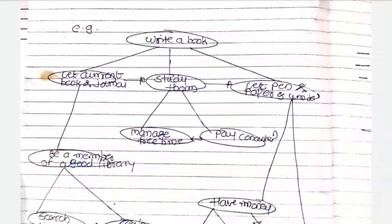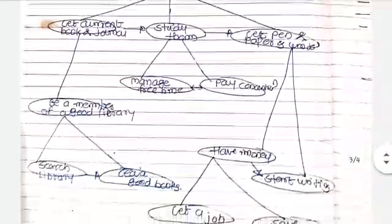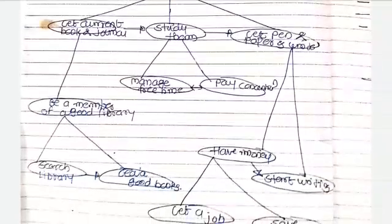If study is over of that book, journal then that person is ready to write that book. Now next, get current book and journal is dependent on be a member of a good library. And if you wanted to be a member of a good library, then we have to search library and get the good books.